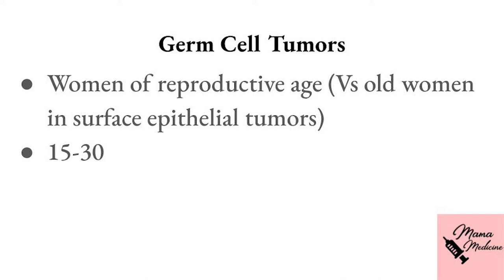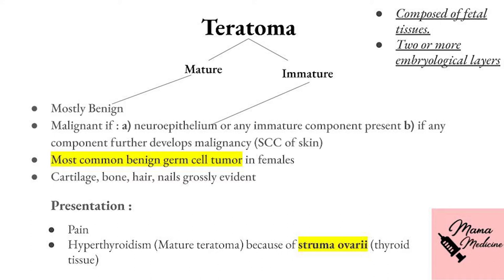Teratoma is very high yield. The key fact is that it is composed of fetal tissues — the oocyte gives rise to these germ cell tumors. A teratoma consists of two or more germ cell layers: ectoderm, endoderm, and mesoderm. So it can have ectoderm and mesoderm, ectoderm and endoderm, or any combination.